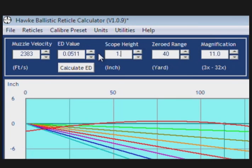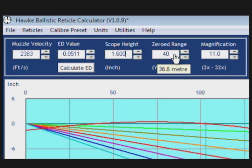Step 3, scope height. This will be from the center of your bore to the center of the scope. Step 4 will be our zero range. This will be the range that you are going to sight in your firearm.